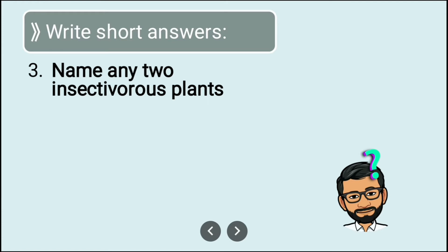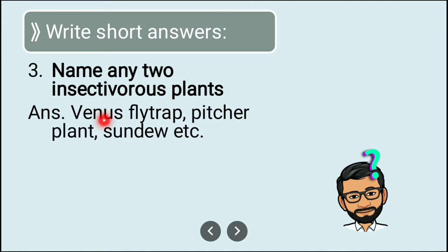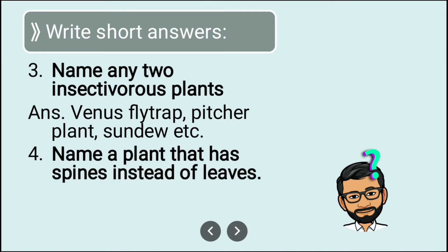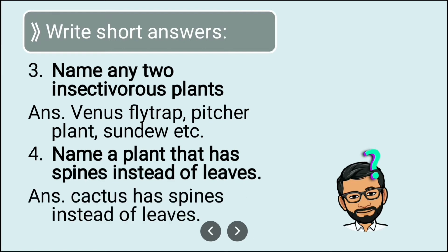Name any two insectivorous plants — plants that feed on insects. Venus flytrap, pitcher plant, and sundew are insectivorous plants. Next question: name a plant that has spines instead of leaves. The answer is cactus — cactus has spines instead of leaves and is found in desert areas.